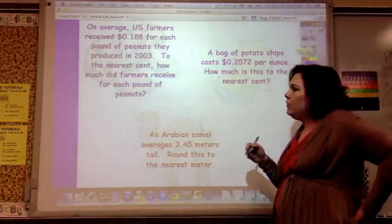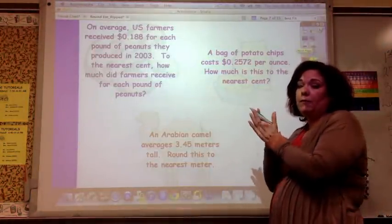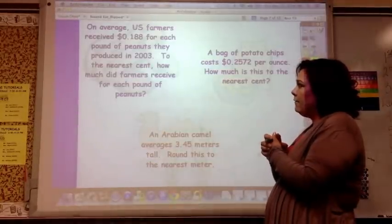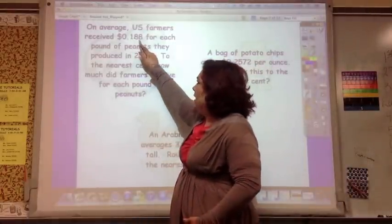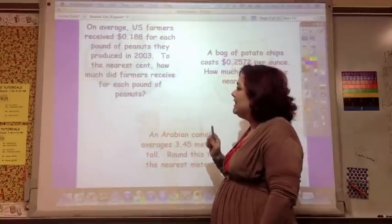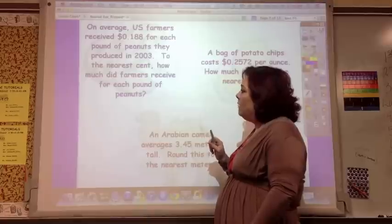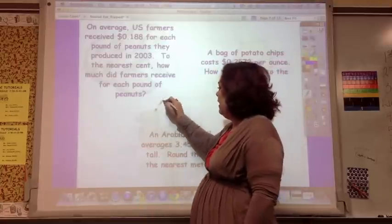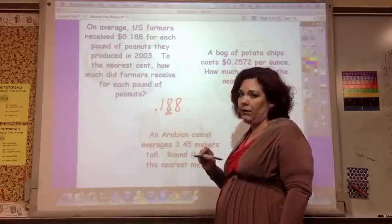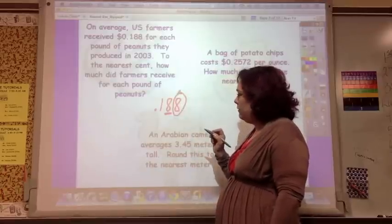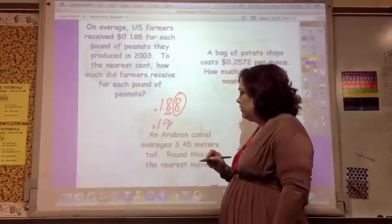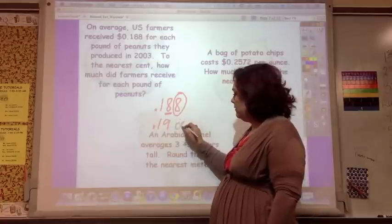So now you're going to find these a lot in word problems and in everyday life, deciding what you're going to do. So on average, U.S. farmers received point one hundred and eighty-eight thousandths of a cent for each pound of peanuts they produced in 2003. To the nearest cent, cent means round to hundredth. How much did farmers receive for each pound of peanuts? So if they have point one eighty-eight cents would be this one. That's the nearest cent. Look to this one. So eight's going to make eight go to nine. So nineteen cents.